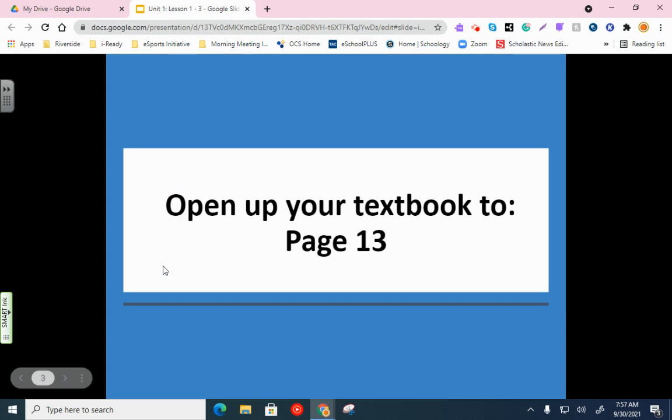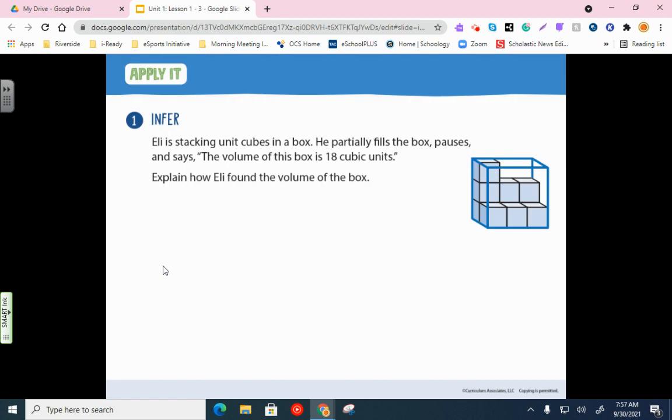All right. Go ahead and open up your textbooks to page 13 and we'll start taking down some notes. All right. For number one here, it says, gives us a little scenario where Eli is stacking unit cubes in a box. He partially fills the box, pauses and says the volume of this box is 18 cubic units. Explain how Eli found the volume of the box. So basically what they're asking is, how did Eli know the answer without finishing putting all the unit cubes in the box?